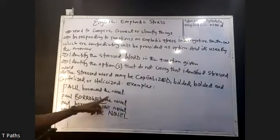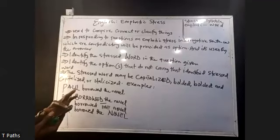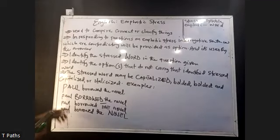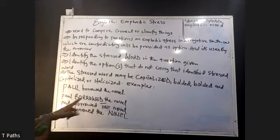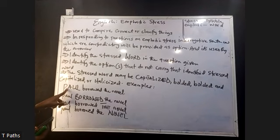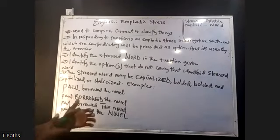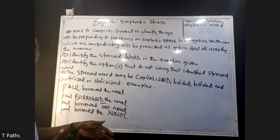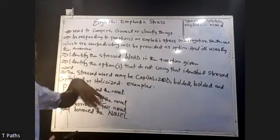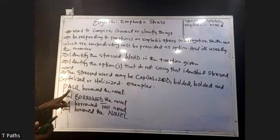Look at this example: PAUL borrowed the novel. You can see that Paul is emphasized — it's written in capital letters. By saying PAUL borrowed the novel, we are saying it is Paul and no one else — it's Paul, not Peter, not Michael, not Kingsley, not John, not James. That's why Paul is written in capital letter for emphasis — so that the owner of the book doesn't go looking for anyone else. The emphasis is on Paul.